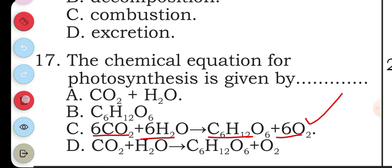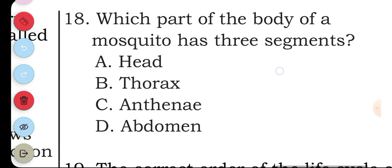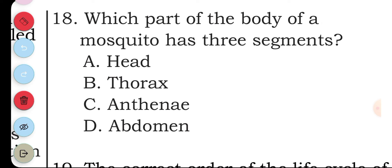Question eighteen: which part of the body of the mosquito has three segments? A head, B thorax, C antennae, D abdomen. The answer to question eighteen is B, thorax. You have the prothorax, mesothorax, and metathorax.